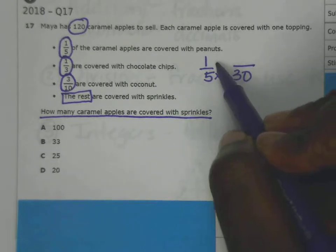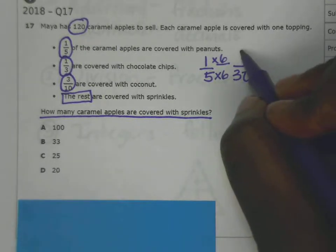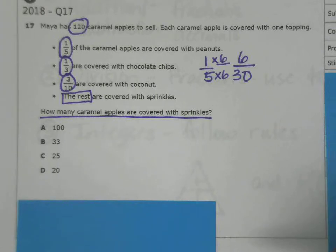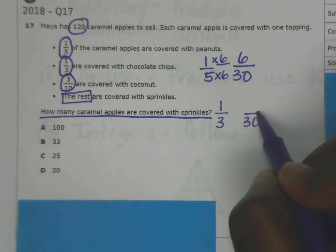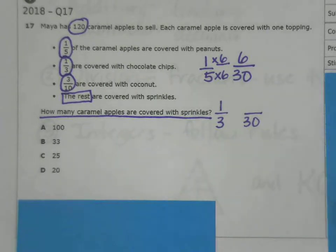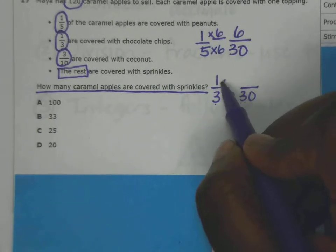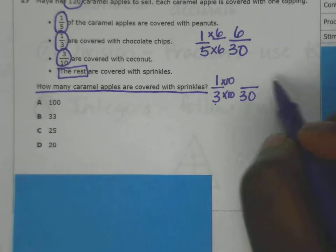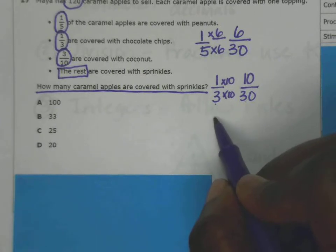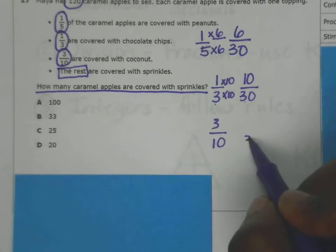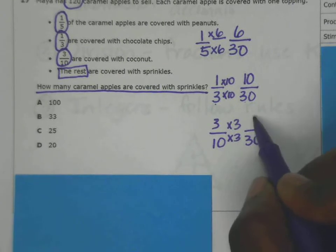I'm going to change one-fifth to a denominator of 30. I multiply by 6 top and bottom. Whatever you do to the top, you do to the bottom. One times six is six, so that's 6/30. One-third - to get to 30, I multiply by 10 top and bottom. One times 10 is 10, so that's 10/30. The last fraction is 3/10. To get to 30, I multiply by 3 top and bottom. Three times three is 9, so that's 9/30.